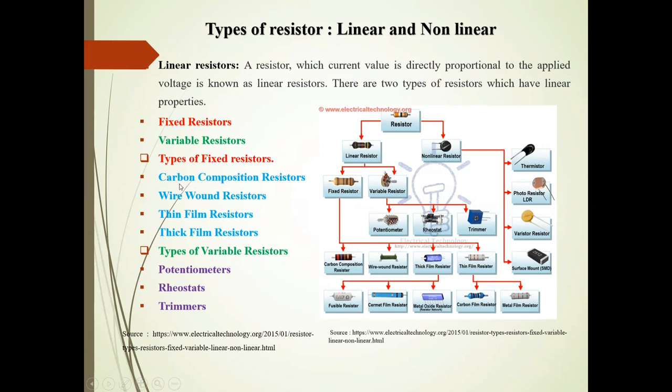Now types of fixed resistors: carbon composition resistors, wire wound resistors, thin film resistors, thick film resistors. Types of variable resistors: potentiometers, rheostats and trimmers. All these types are shown here in this figure.